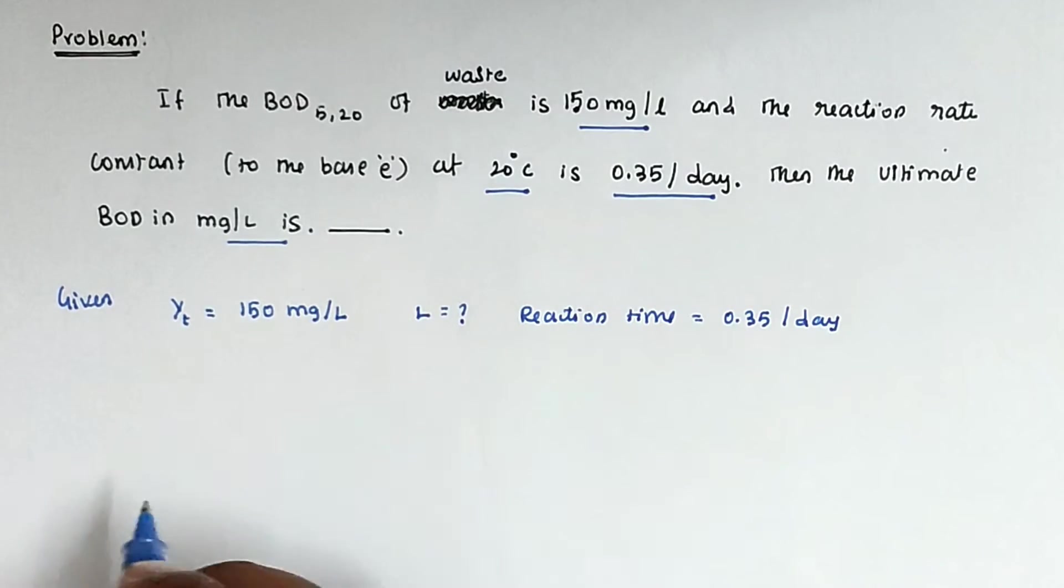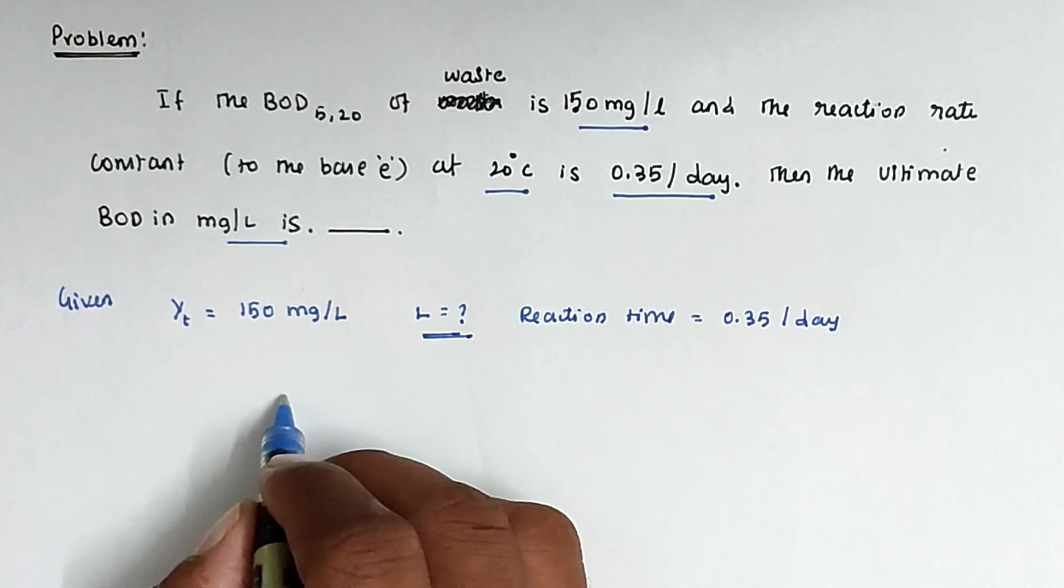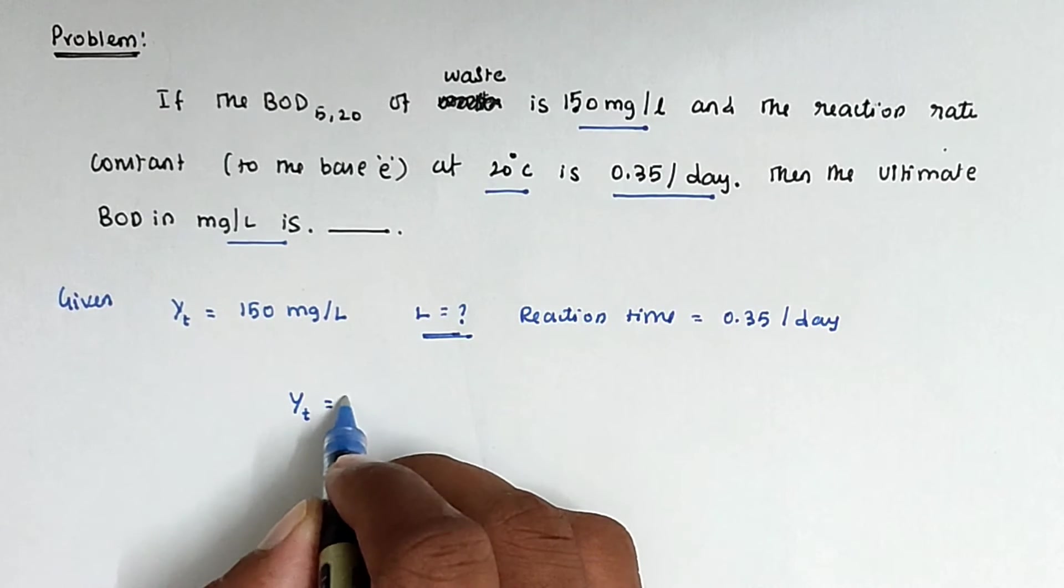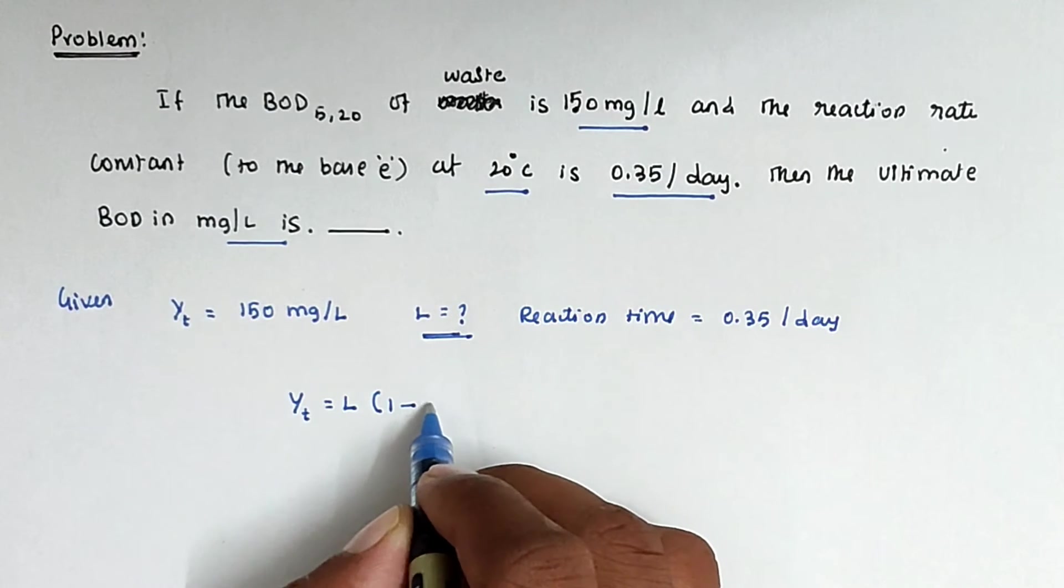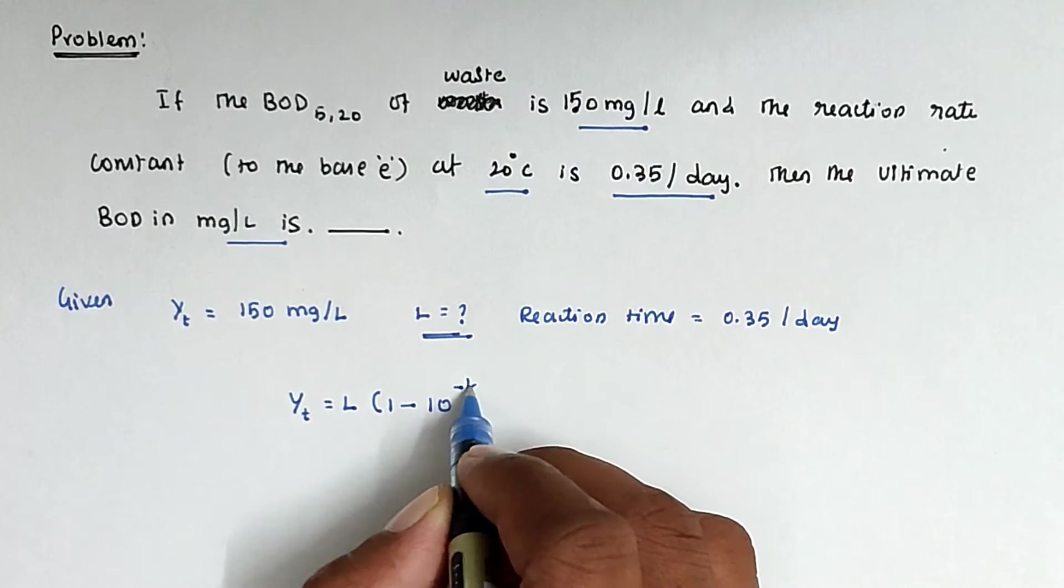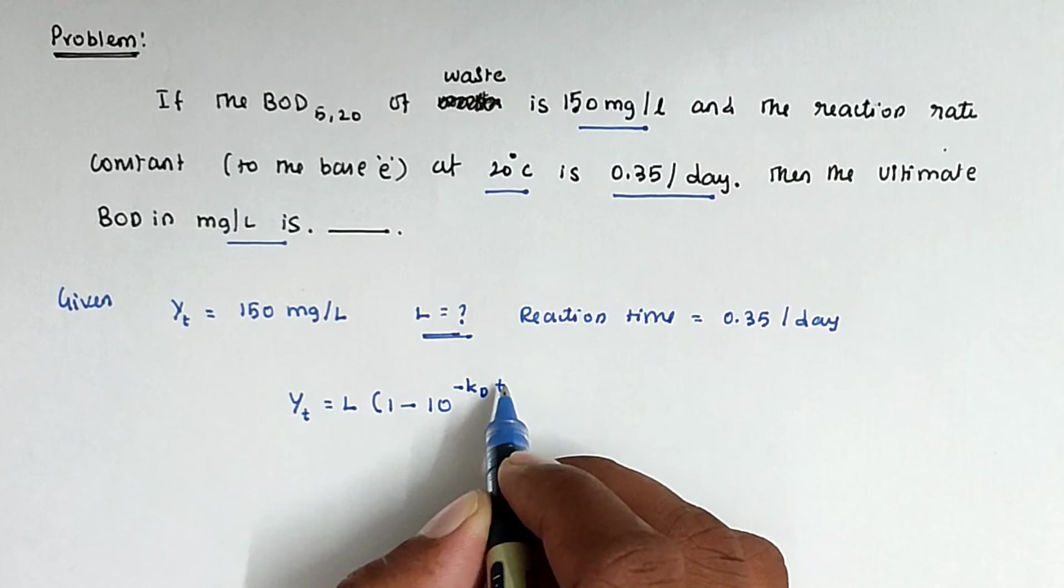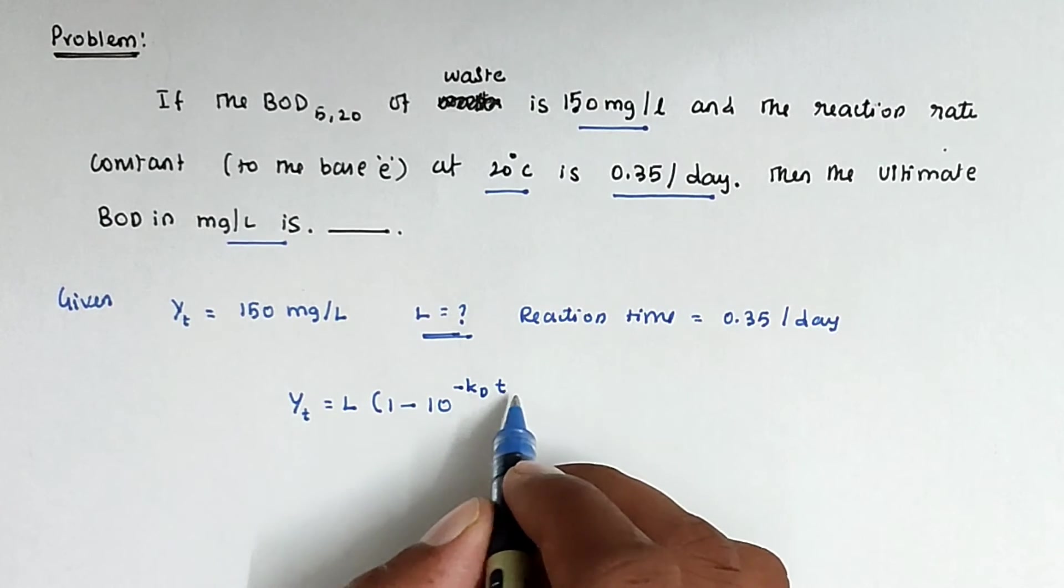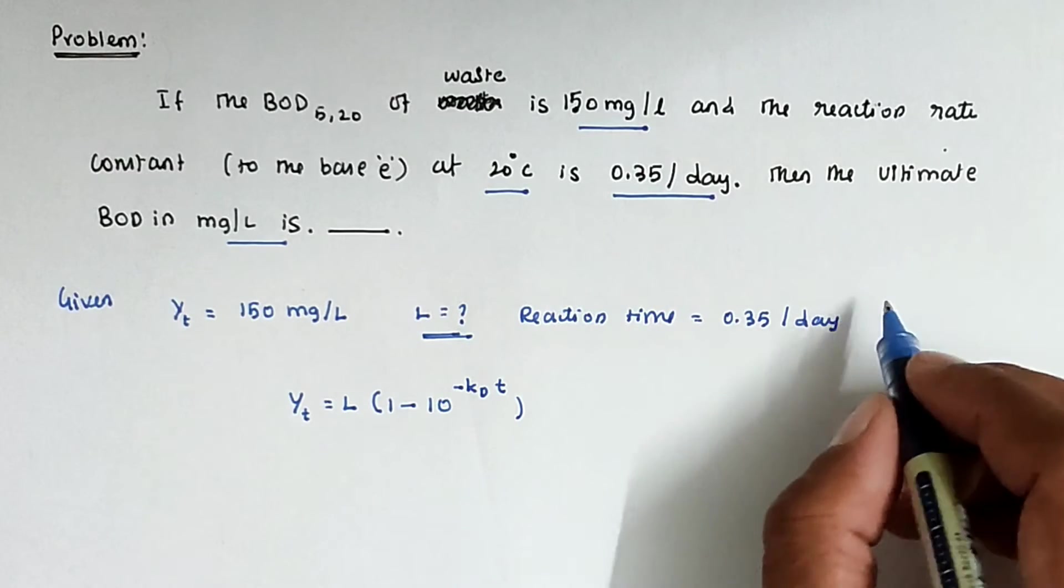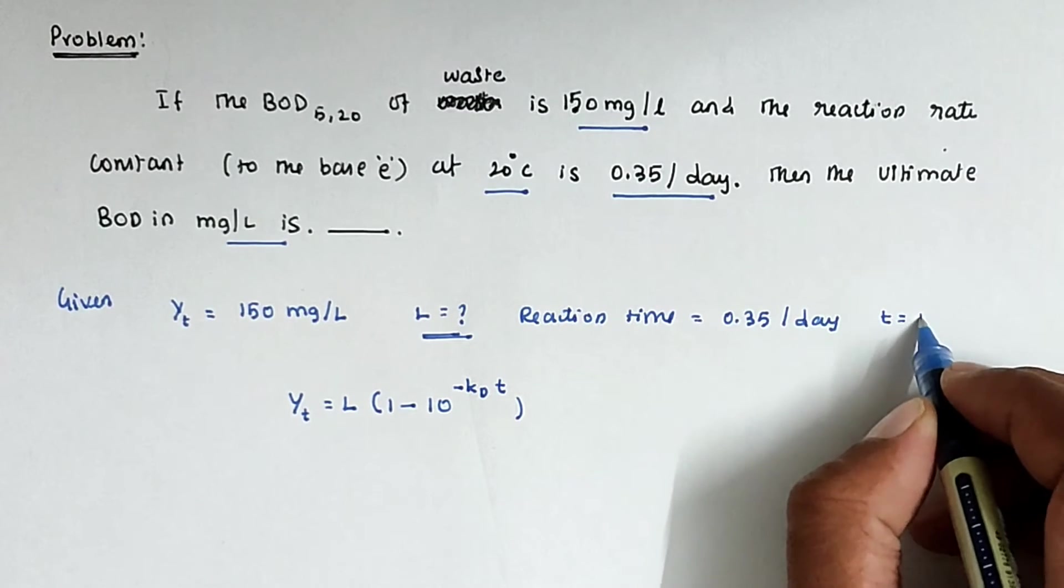For the L value, the formula is Y_T equals L times 1 minus 10 to the power of minus K_D times T. That is the formula. T is also given, T is equal to 5 days.